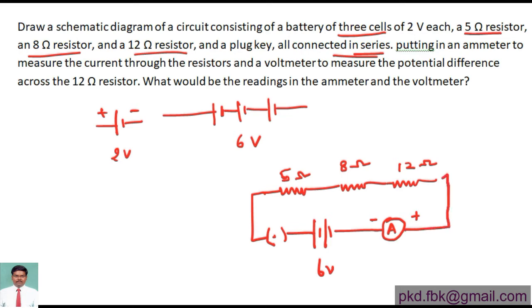So the ammeter is connected here. They are asking for the potential difference across the twelve ohm resistor, so I have to calculate this voltage. I'm connecting a voltmeter parallel to the twelve ohm resistor. Now how to approach this problem: first, it's a series circuit.